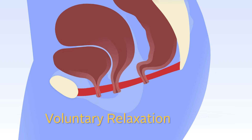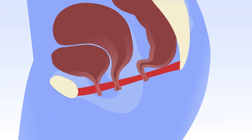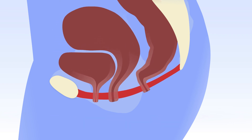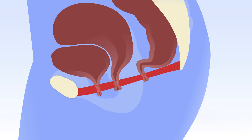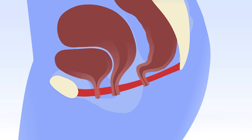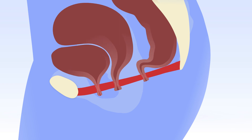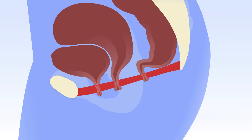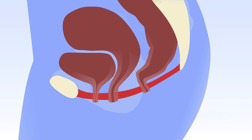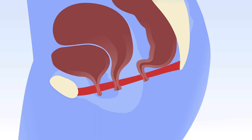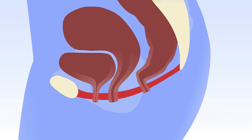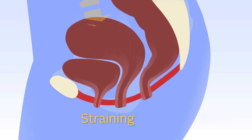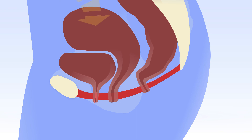Relaxation of the pelvic floor muscles means that the perineum and pelvic organs return to at least their resting state. A voluntary relaxation can be absent, partial, or complete. If pelvic floor muscles do not relax when required, problems during bladder or bowel emptying or pain during sexual intercourse may occur. During straining, the pelvic floor muscles should relax, resulting in a downward movement of the pelvic floor.